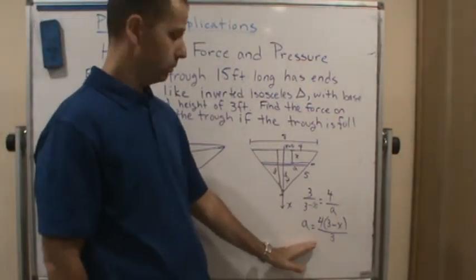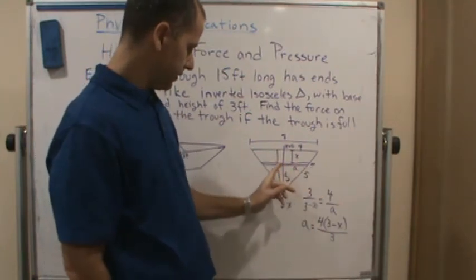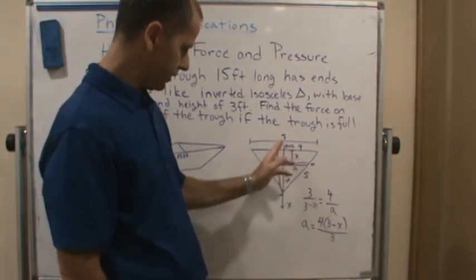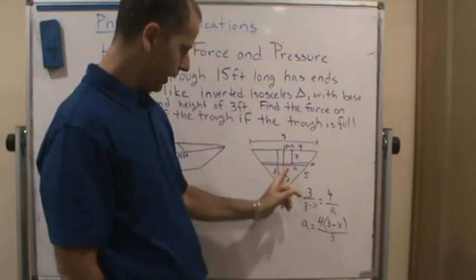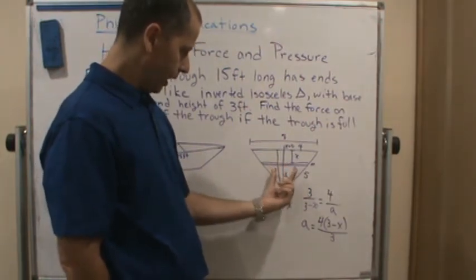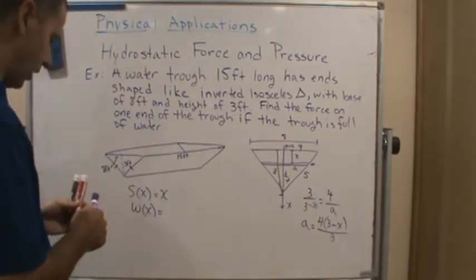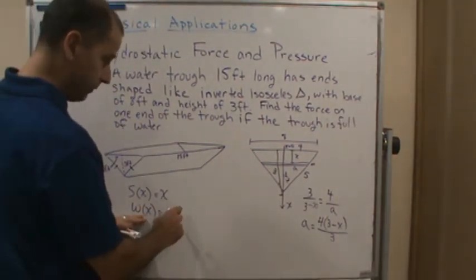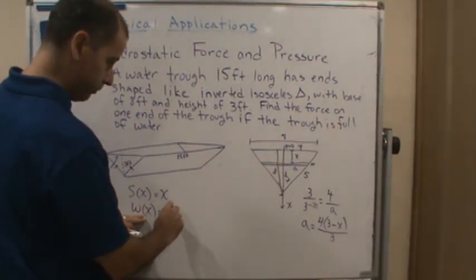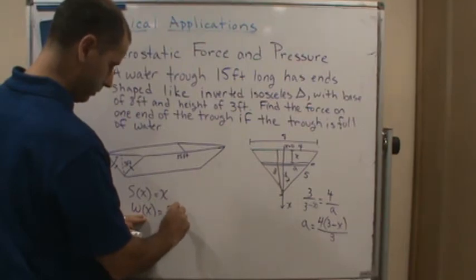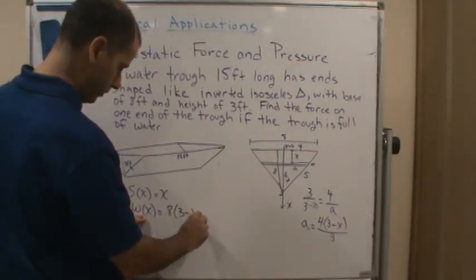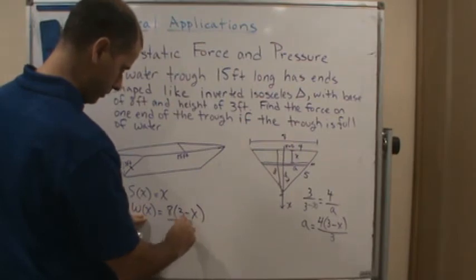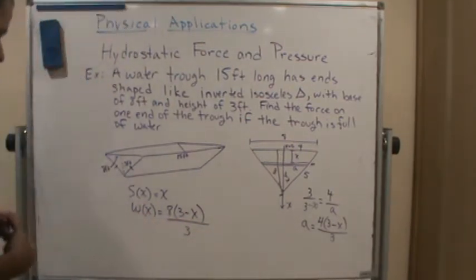Now that's not the width though. The width is double, right? Because our reference point goes right down the middle. So the width is going to be double a, so 2 times a. So that means our function for the width is going to be...